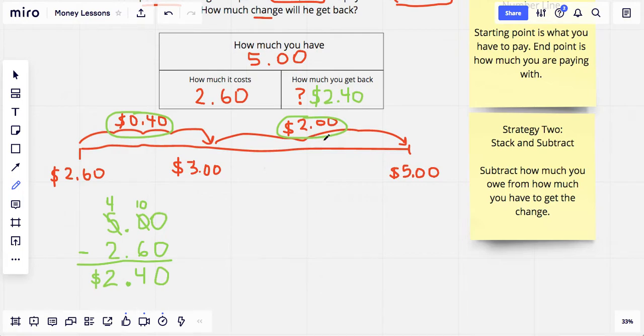So in this case, Adam would get back $2.40, which is what you see here. So we have a match. We have accuracy. So that is how we can use subtraction to find the change that you would receive back from a purchase if you paid more than what the actual item costs.